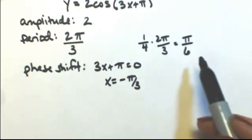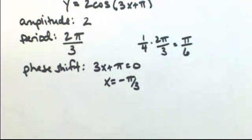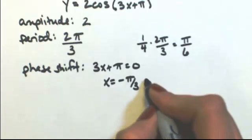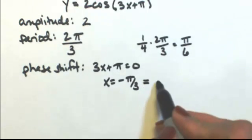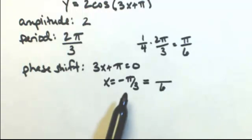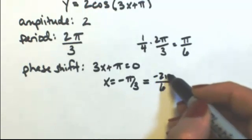From negative pi over 3, I'm going to add pi over 6. Now if you look at it, we have two different denominators. So I'm going to make this a little bit easier on myself and change this into a common denominator of 6. So this is treated as negative 2 pi over 6.